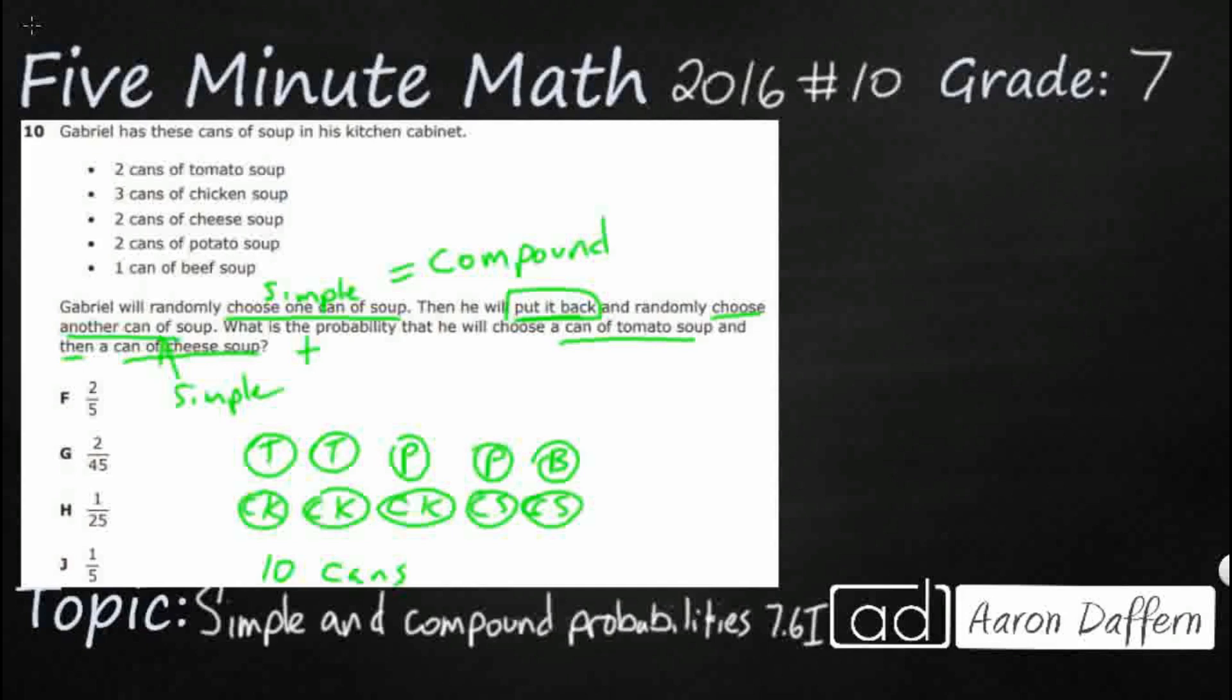So let's look at our first simple event. The first simple event we're looking here is choosing a can of soup that is tomato. So let's take our first simple event and that is going to be tomato. Let's just see how many, I've got one, two tomatoes. So I'm going to say two tomato and I've got 10 total. So that's my first simple event. My next simple event is going to be after I put that tomato back, I want to grab a cheese. So then my cheese, same thing. Different labels, but it's two cheese over 10 total.